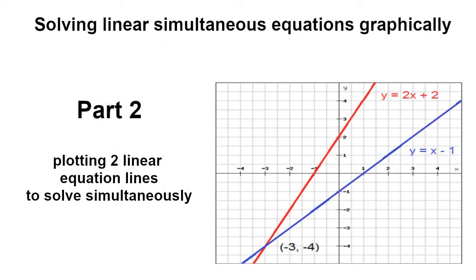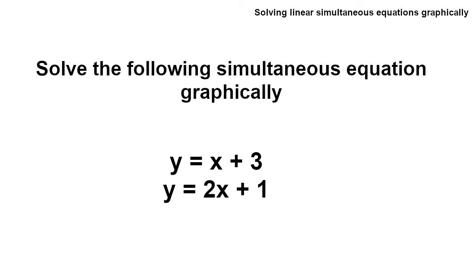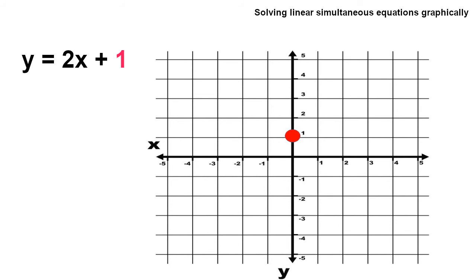Now moving on to part 2. We're going to plot two linear equation lines and solve the values of x and y simultaneously. The question is: solve the following simultaneous equations graphically — y equals x plus 3 and y equals 2x plus 1. I'm going to look at the first equation, y equals 2x plus 1. The first point I'm going to plot is where the line intercepts the y-axis — the 1 represents that point. From that first point, we can plot the gradient, which is 2, meaning I go along 1 and up 2, since 2 over 1 gives me 2.